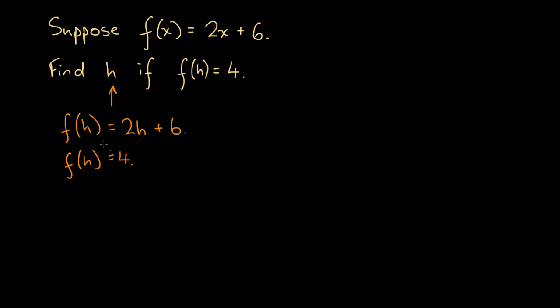So what we can do here is we could say f(h) = 2h + 6, also f(h) = 4. So that means that 2h + 6 must equal 4, since these two expressions each equal f(h). So what we could do here is we could write 2h + 6, that equals f(h), and f(h) = 4. So 2h + 6 = 4.